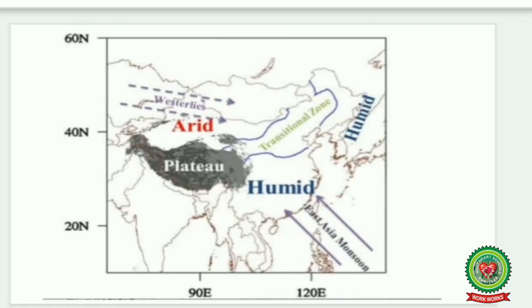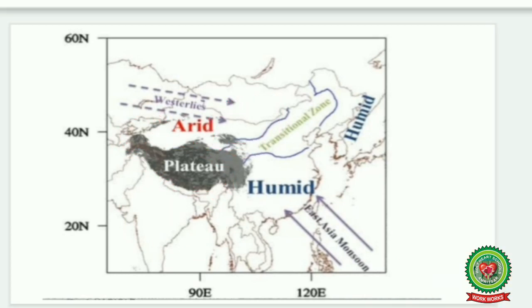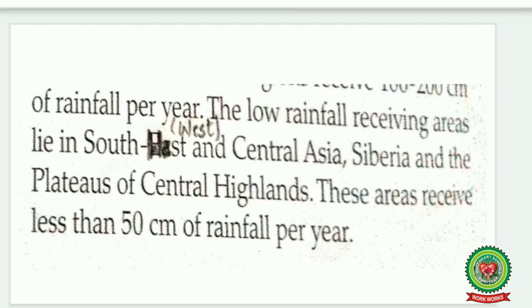Now we are going to talk about the areas of Asia which receive very less rainfall or are dry. These areas are Central Asia, the plateau, Western Asia, and Siberian Asia. These parts receive less than 50 centimeters of rainfall. Now let's read it.